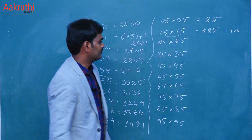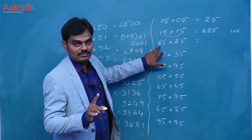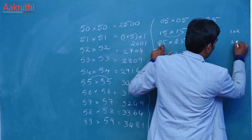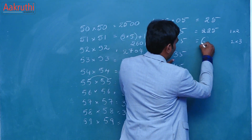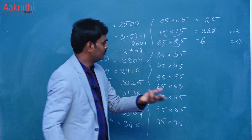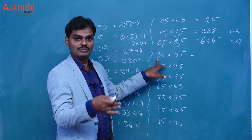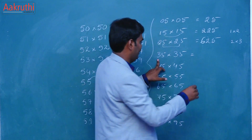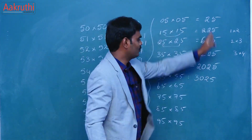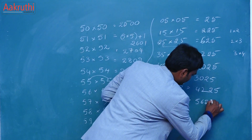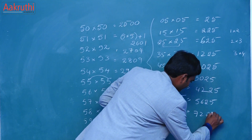And suppose 25 into 25: here the first number is 2, so 2 after 3, the first step is 2 into 3, which is 6, and the next step is 5 into 5, which is 25. So the answer is 625. Likewise, 35 into 35: 3 after 4, so 3 into 4 is 12, and 5 into 5 is 25, so the answer is 1225. Also 85 into 85: 8 after 9, so 8 nines are 72 and 5 into 5 is 25, giving 7225.